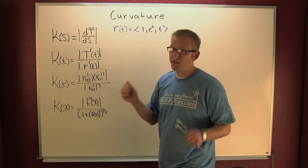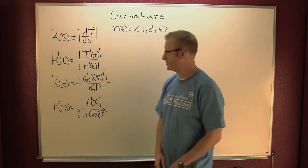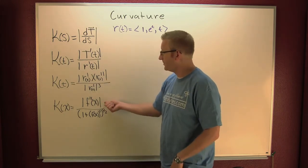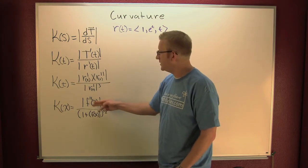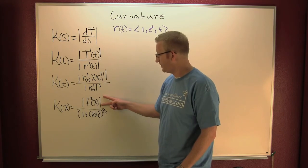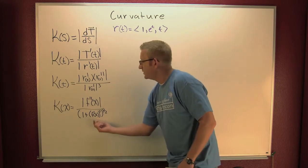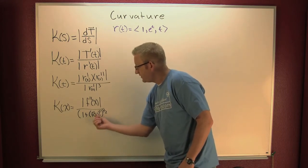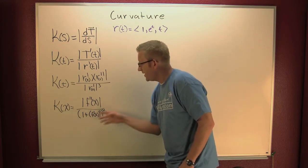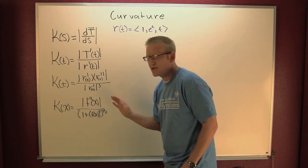And then there was a special case. If your function was a planar function, your curvature in the plane is the magnitude of the second derivative of the function divided by one plus the first derivative squared, and then all that to the three halves power. We'll talk about how we get from here to here in just a second.